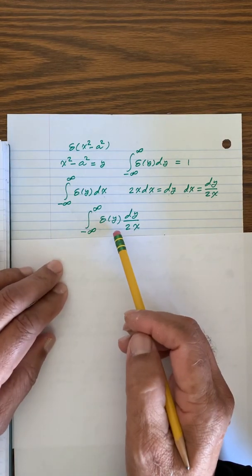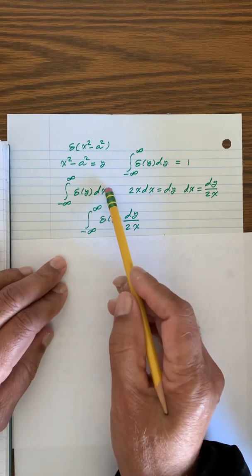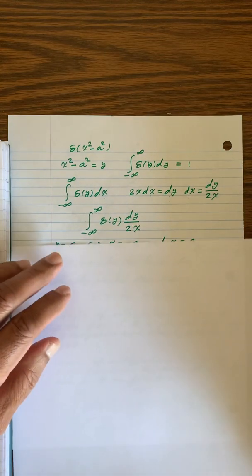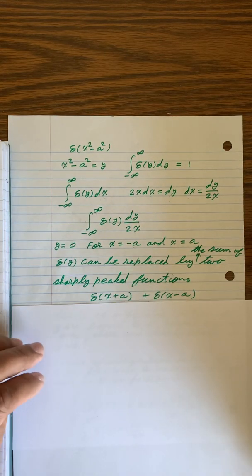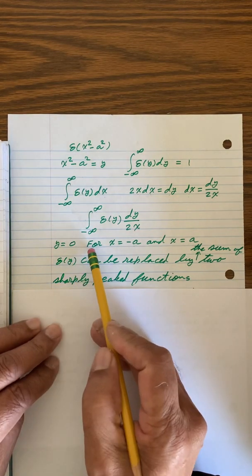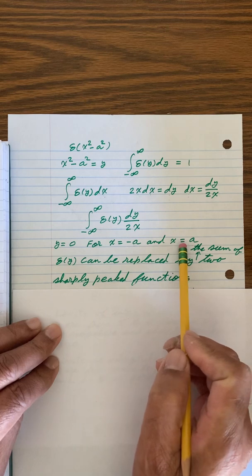And here, I have just rewritten this, where I have changed the dx to dy over 2x. y is equal to 0 for x equal to minus a, and x equal to a.